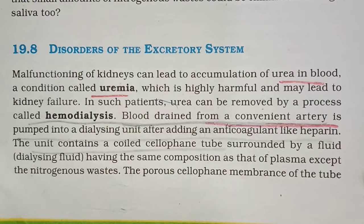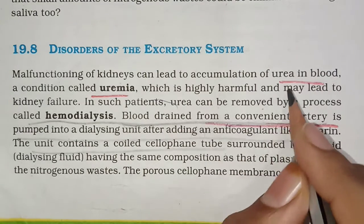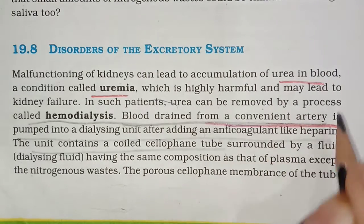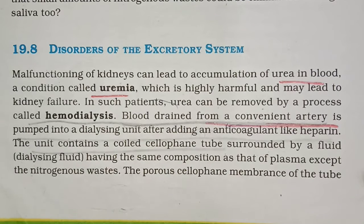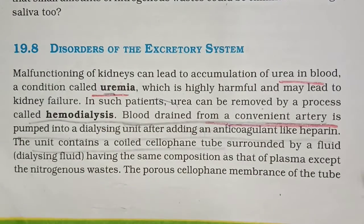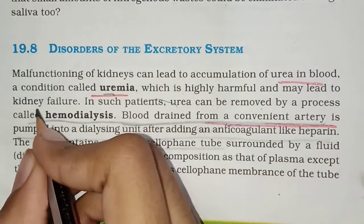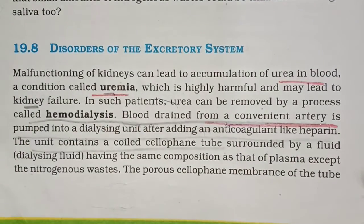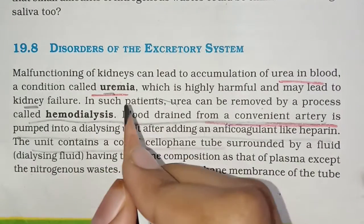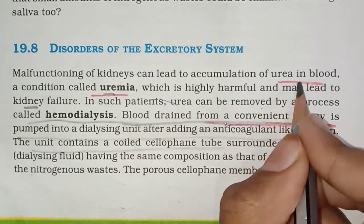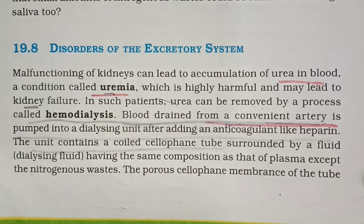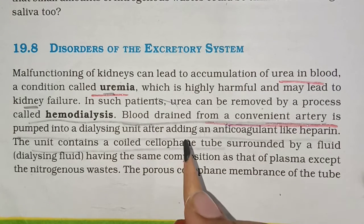Then it can cause different diseases. What can happen is accumulation of urea. When urea accumulates in the blood, it means the blood is not purified — this is called uremia, which is harmful. If the kidney is not functioning properly, urea builds up, and that condition is also referred to as kidney failure.